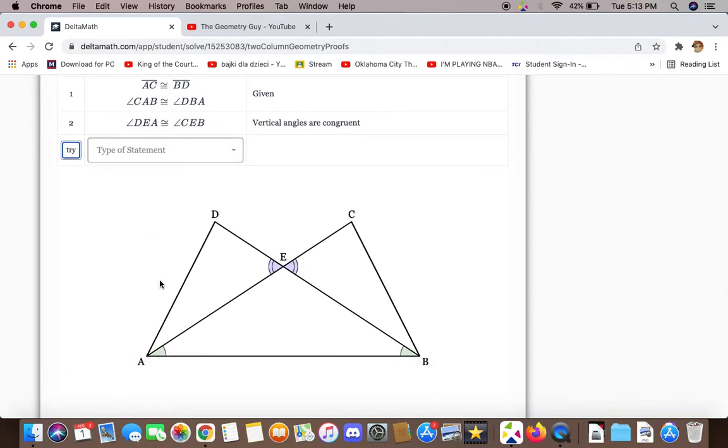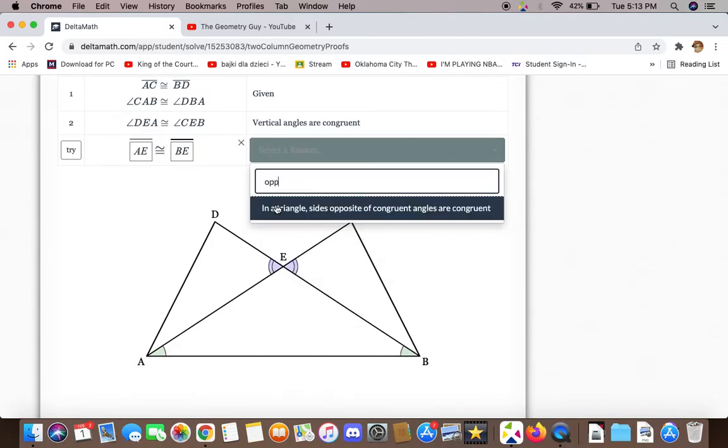We can also say that AE and BE are congruent to each other because in the triangle, sides opposite of congruent angles are congruent.